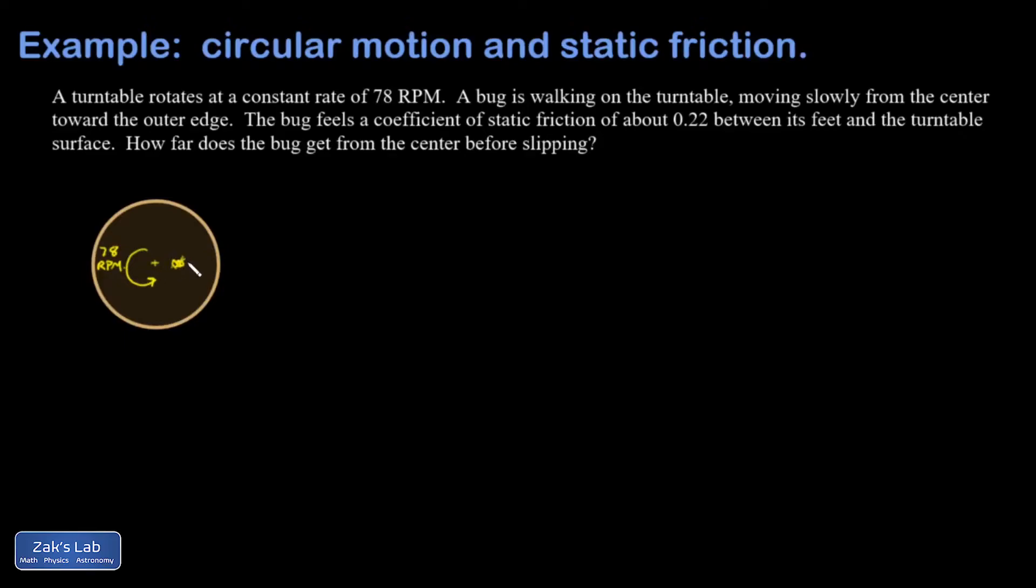Here's the bug getting further and further from the center of curvature. I know that it's accelerating at any point toward the center of curvature. We're considering its outward motion to be slow, and we're just trying to look at a moment in time where it happens to be standing. So now it's going to accelerate toward the center of curvature. This bug's going round and round like this at this particular moment with a radius of r, and that's the unknown here.